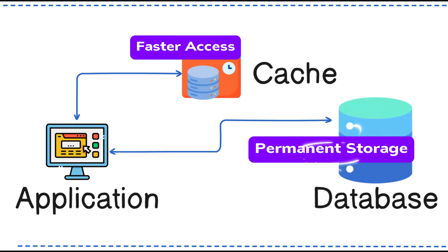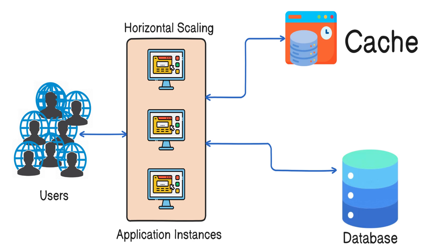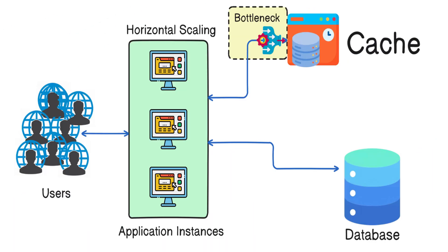Now suppose the traffic on our application increased 10 times. To handle the increased traffic, we can think of a few changes in our application architecture. We can scale our application so that more requests can be distributed for processing, reducing the load on a single application server. But if we keep only one cache instance, it might become a bottleneck. With high traffic, this single cache gets overwhelmed, leading to slow responses or even failures.